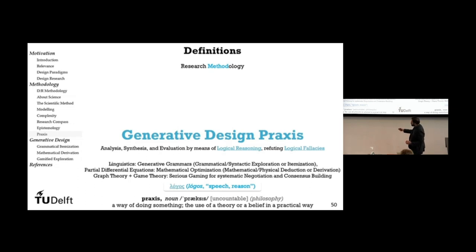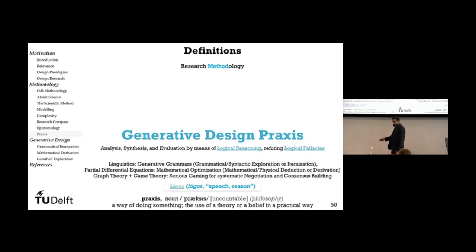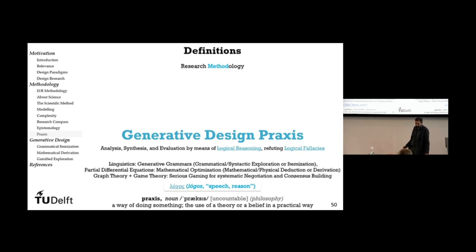There is a close connection between speech, reason, and what we're doing — the idea of generative grammars. You can really trace the word 'generative design' to the ideas of generative grammars from Chomsky. The other methods we use include grammatical methods and mathematical methods — these grammatical methods are almost also mathematical in their nature. We also have serious gaming for systematic negotiation and consensus building.